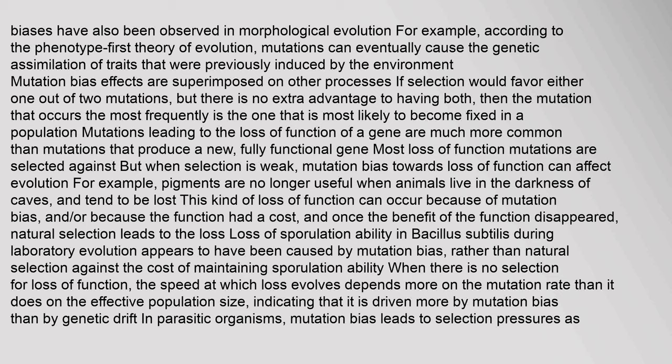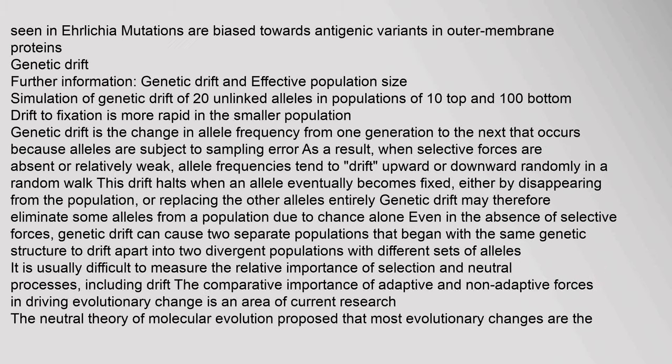For example, pigments are no longer useful when animals live in the darkness of caves and tend to be lost. This kind of loss of function can occur because of mutation bias, and/or because the function had a cost, and once the benefit disappeared, natural selection leads to the loss. Loss of sporulation ability in Bacillus subtilis during laboratory evolution appears to have been caused by mutation bias rather than natural selection. When there is no selection for loss of function, the speed at which loss evolves depends more on the mutation rate than on the effective population size, indicating it is driven more by mutation bias than by genetic drift.